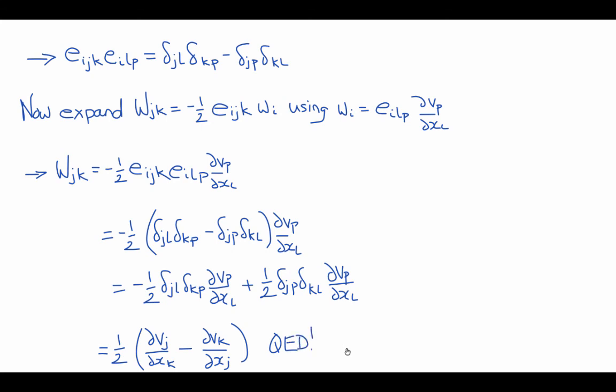So this is the result that we wanted. We've now proven this expression relating the components of the spin tensor to the components of the vorticity vector through the permutation symbol e.